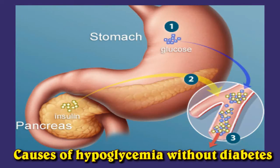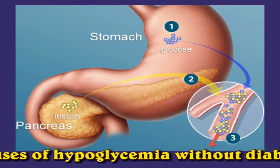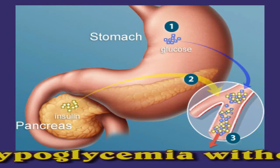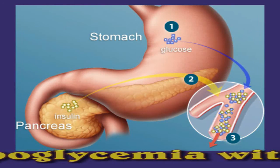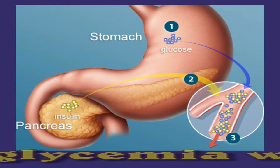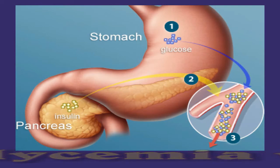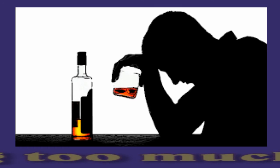Causes of hypoglycemia without diabetes: in people without diabetes, hypoglycemia can result from the body producing too much insulin after a meal, causing blood sugar levels to drop. This is called reactive hypoglycemia. Reactive hypoglycemia can be an early sign of diabetes.